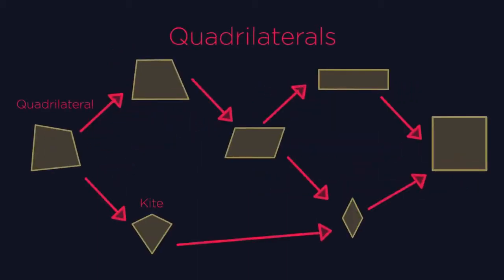So quadrilaterals are actually all very interconnected. By definition, a square is a quadrilateral, a trapezium, a parallelogram, a rectangle and a rhombus.